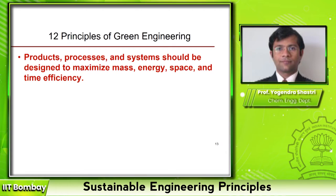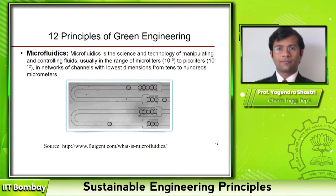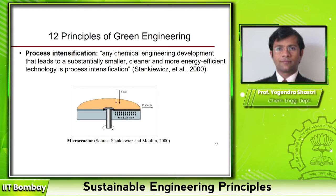In both these examples — microfluidics and process intensification — at an individual equipment level this would be very efficient. But in an engineering system, we also have to worry about capacities or production targets. Each micro reactor is very efficient but because it is very small in size, the capacity is also very low.